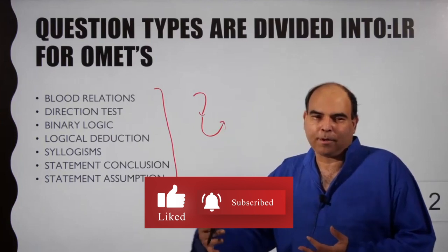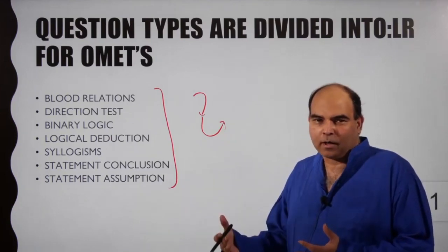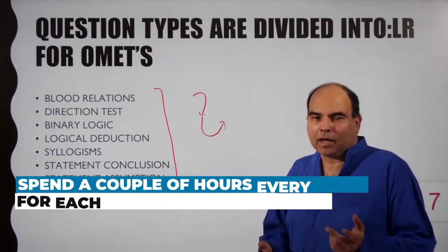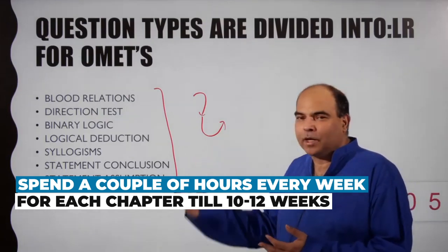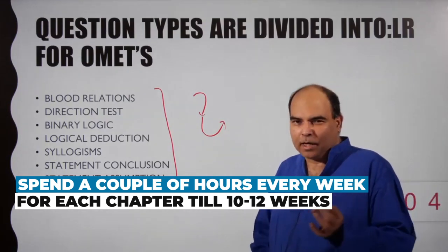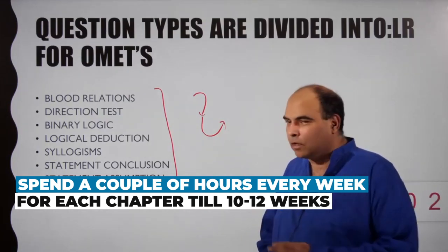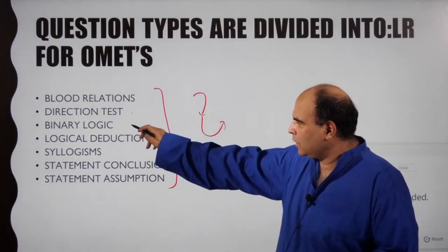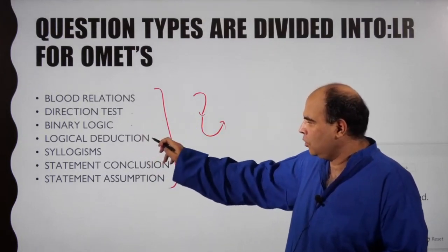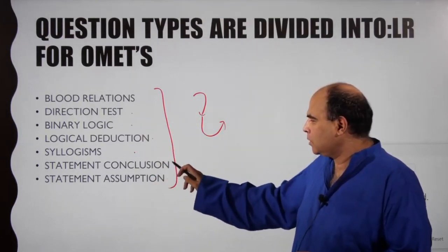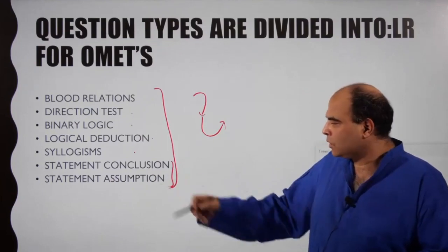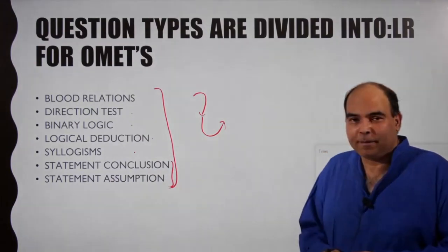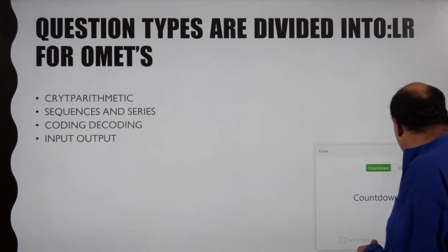Anywhere during your preparation of LR in a five-month process, just spend a couple of hours every week on one chapter each, and over 10-12 weeks cover all the chapters. The chapters are: blood relations, direction test, binary logic, logical deduction, syllogism, statement conclusion, and statement assumptions — all these chapters are there.